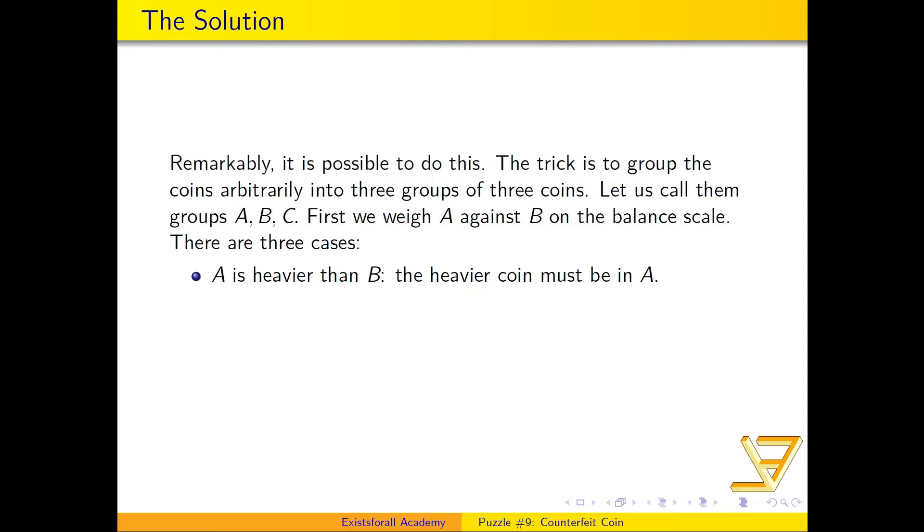Five, four, three, two, one. All right, let's take a look at whether this is possible. Remarkably, it is possible to figure out which is the heavier coin. What you need to do is not group them into groups of twos or fours, but into groups of three. So you group them into three groups of three. Let's call the three groups A, B, and C.